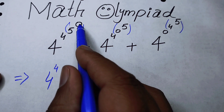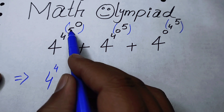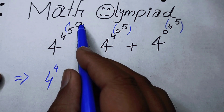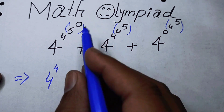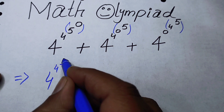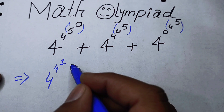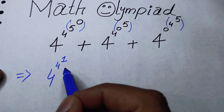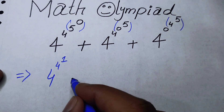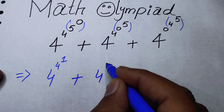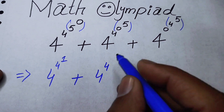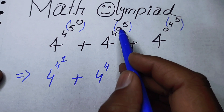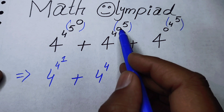Here we first solve 5 to the power of 0, and we know that 5 to the power of 0 is equal to 1 — something to the power of 0 is always 1. So here I can write 5 to the power of 0 is 1, plus 4 to the power of 4.